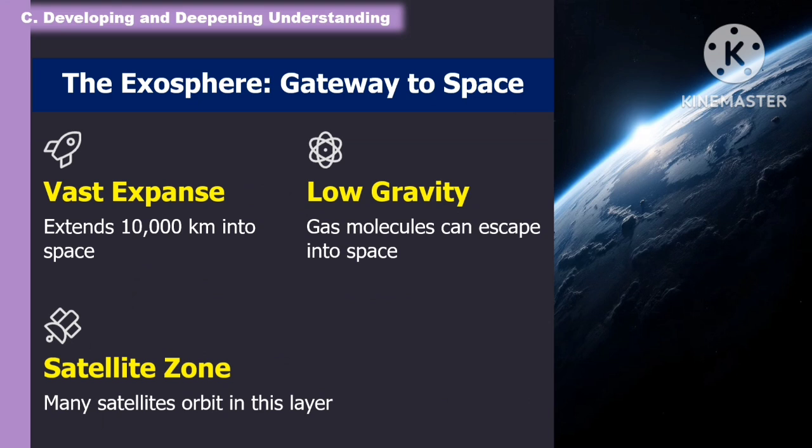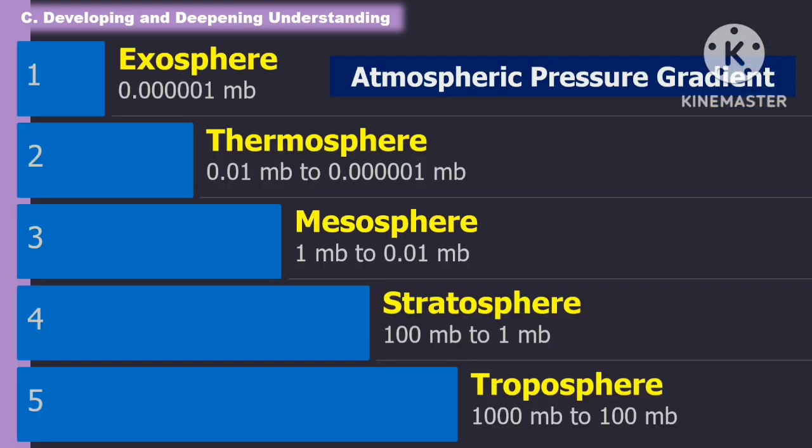Another layer of the atmosphere is the exosphere, the gateway to space. It has a vast expanse extending up to 10,000 kilometers into space. It features low gravity, where gas molecules can escape into space. It is also the satellite zone, where satellites orbit in this layer. The following are the atmospheric pressure gradient in the layers of the atmosphere.